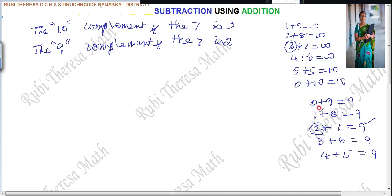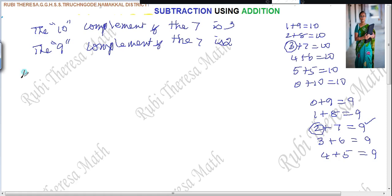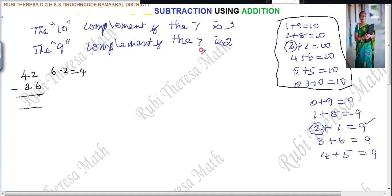So the same problems, let us try — what we have used for quick subtraction. 42 minus 26. Just if you want to recall quick subtraction: 6 minus 2 is 4. Then, which side are you going to take? 10. What is the complement of 4 based on 10? 6. Then adding 1 here — that is 3. 4 minus 3 is 1. So the answer is 16.